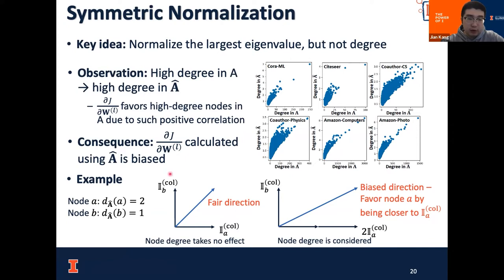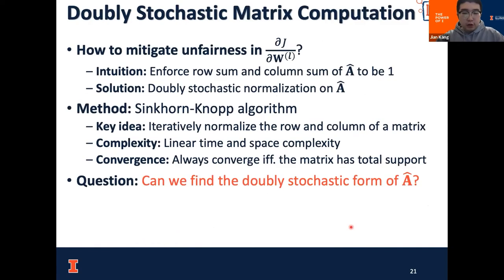In a simple toy example: if node degree had no effect on gradient computation, we would update model parameters in a direction that benefits both nodes equally. But considering node degrees, the direction is actually rotated towards high-degree nodes, and thus benefits them as a result. To mitigate the impact of node degree in gradient computation, we want to ensure that the sum of each row and each column in the A-hat matrix is a constant. This naturally leads to the doubly stochastic matrix, meaning the sum of all rows and all columns equals 1.